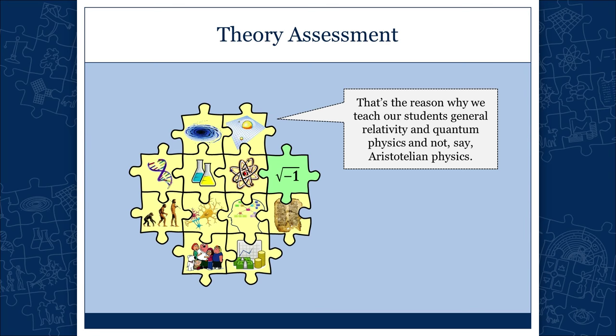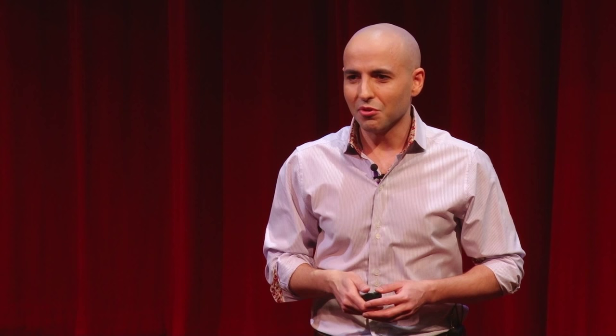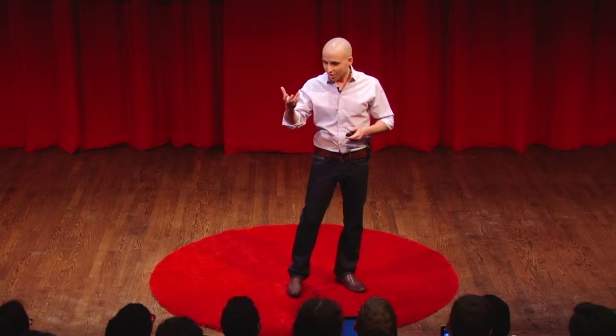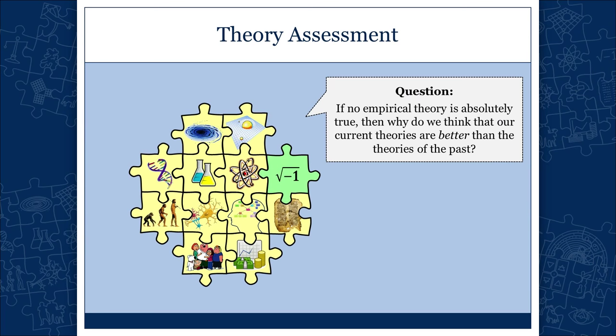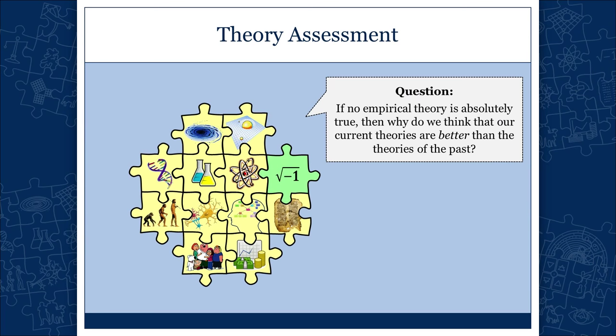All theories in empirical science are fallible, and yet we believe that some theories are better than others. That's why we don't teach Aristotelian physics. If you go to the Department of Physics, you're not going to study Aristotelian or Cartesian physics. We teach those only in the Department of History and Philosophy of Science, out of historical curiosity. The question immediately arises: why do we prefer our currently accepted theories? What makes one theory better than another? How do we decide which theories should be accepted? This is our question today.